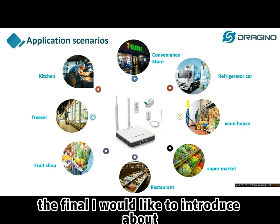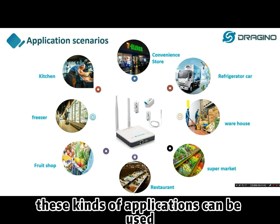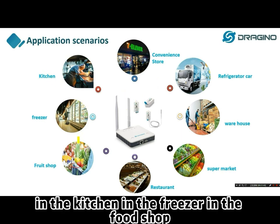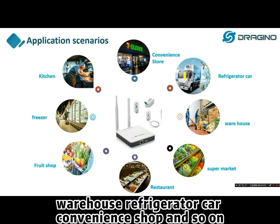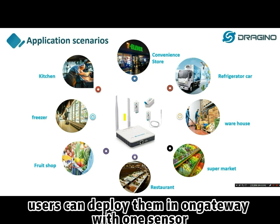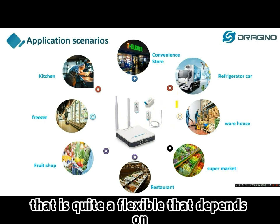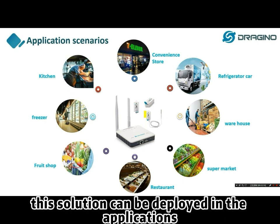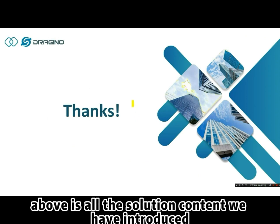Finally, I would like to introduce the application scenarios. These solutions can be used in several food safety scenarios — for example, in the kitchen, freezer, food shop, restaurant, supermarket, warehouse, refrigerator vehicle, convenience shop, and more. The deployment is very flexible: users can deploy one gateway with one sensor, one gateway with two sensors, or one gateway with three sensors, depending on their detailed requirements. Once deployed, this solution can start bringing benefit to their business.